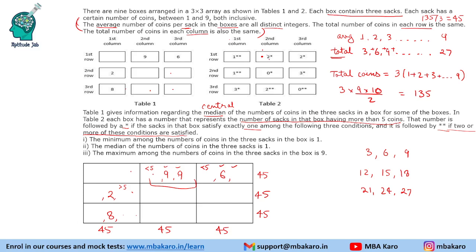For row 1, column 2: it says 2 and double asterisk, meaning two values are greater than 5 and two conditions are satisfied. Since maximum 9 is already satisfied, and minimum cannot be 1 (so only one asterisk would need the other condition). The total must be a multiple of 3 and be between 19 and 23 (since 18 is already used and the remaining value is between 1 and 5). Only 21 fits, so the total is 21 and the third value is 3. We knock 21 off our list.